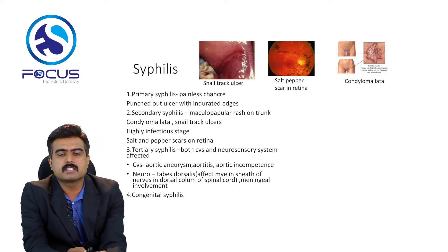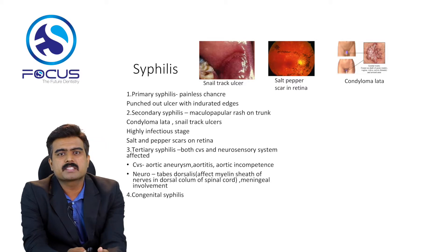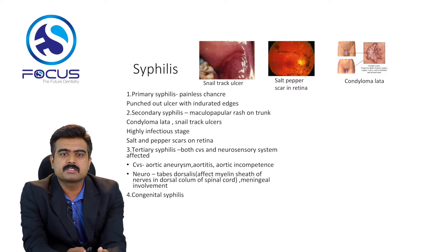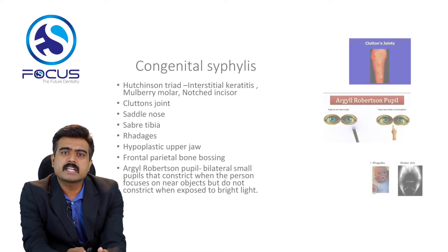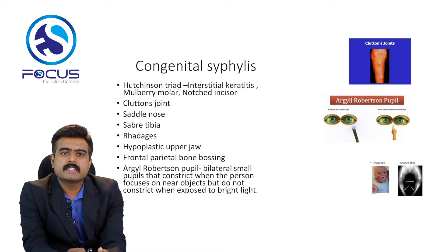In tertiary syphilis, both the central nervous system and cardiovascular system are affected. In the cardiovascular system, aortic aneurysm, aortitis, and aortic incompetence can be seen. In neurosyphilis, we can see tabes dorsalis, which affects the myelin sheath of the dorsal column of the spinal cord, and there will be meningeal involvement.